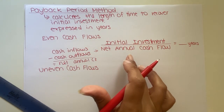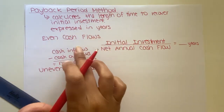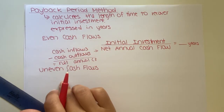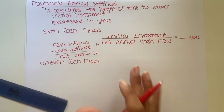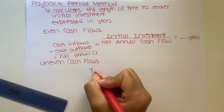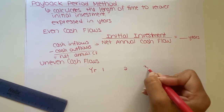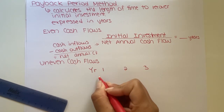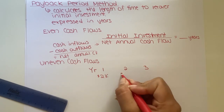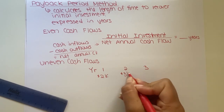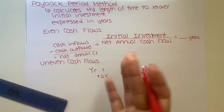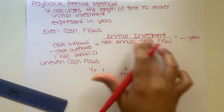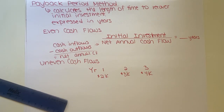In the next video, we will look at the payback period for uneven cash flows — that's when the capital asset produces different cash flows each year, like $2,000 in year one, $3,000 in year two, $4,000 in year three. That different pattern will impact the format we use, so we'll cover that in the next video.